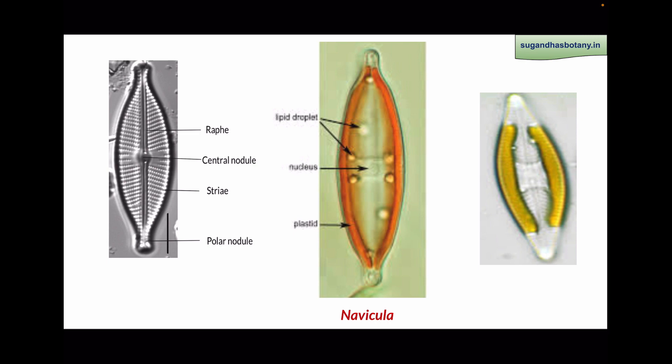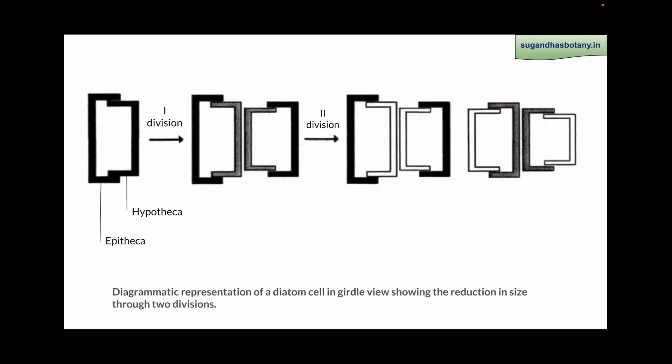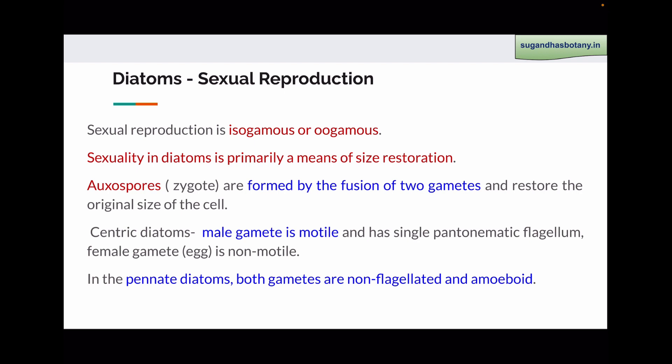Cell division or asexual method of reproduction in diatoms is very characteristic. During cell division, the parent cell divides by mitosis forming two daughter cells. In the daughter cell, the parent cell wall becomes the epitheca of the two daughter cells, and each daughter cell forms a new hypotheca. As a result of cell division, one of the daughter cells is smaller in size than the parent cell and one cell is similar to the parent cell in size. So after several cell divisions, the cell size in diatoms goes on decreasing. Sexual reproduction is a means for size restoration of the cell.